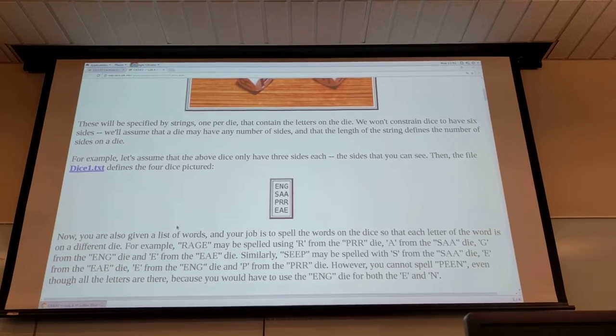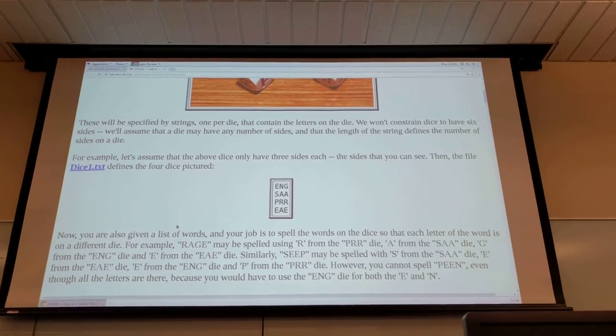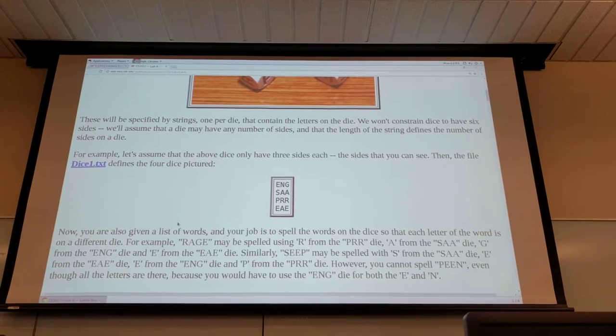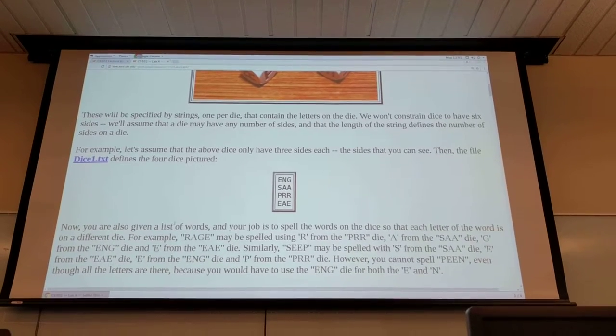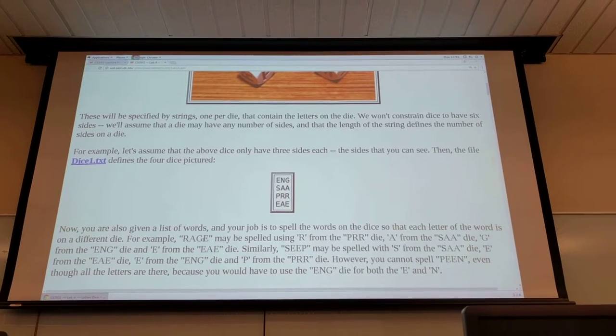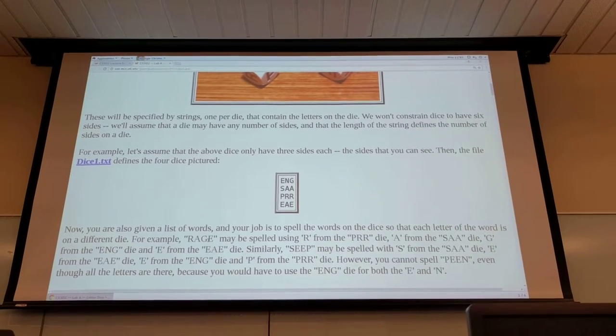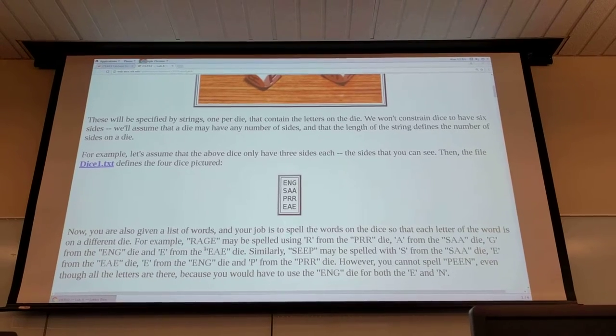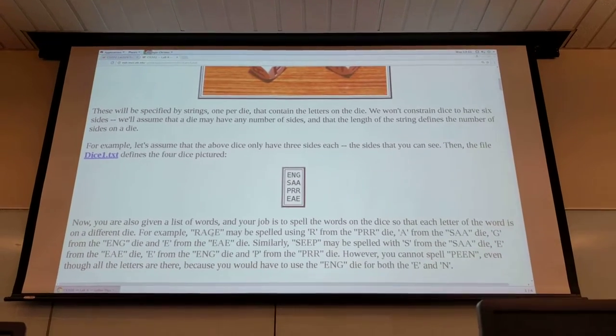Now you also give it a list of words and your job is to spell the words using the die you have. For example if the word is rage you can spell rage using the R from the P-R-R die, A from the S-A-A die, G from the E and G die, and E from the E-A-E die.